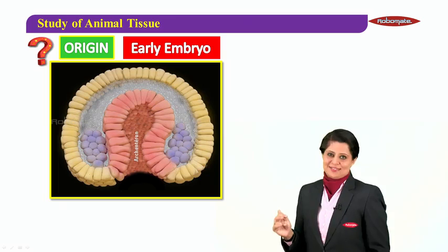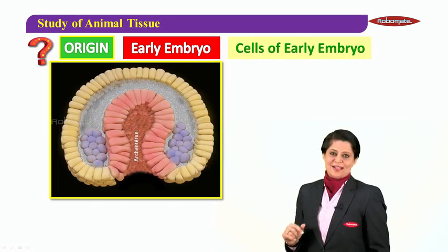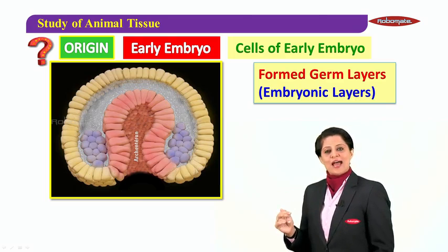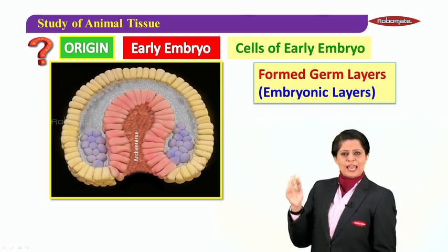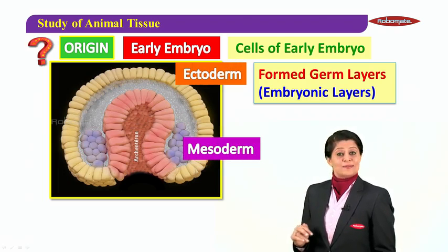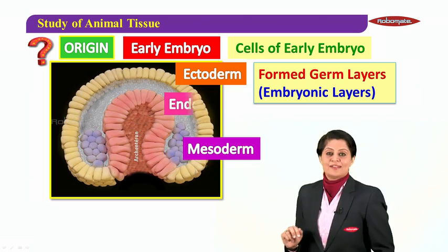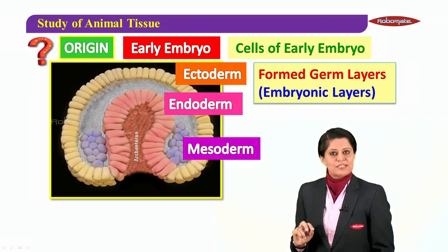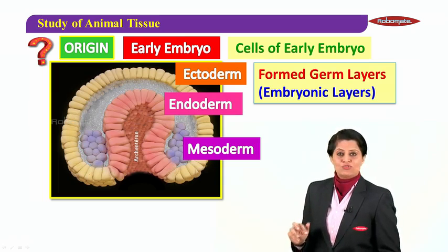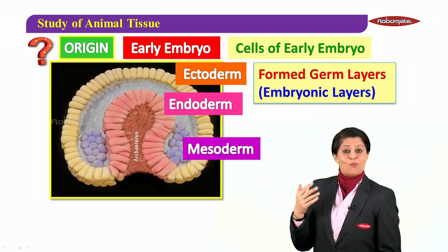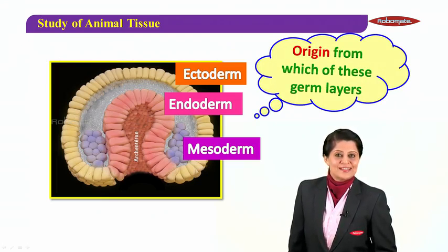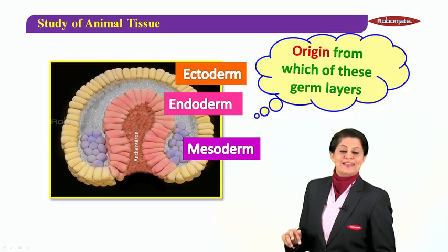As an early embryo, you had cells present in the form of germ layers, also known as embryonic layers. There are three layers: the outermost layer known as ectoderm, the middle layer known as mesoderm, and the innermost layer known as endoderm. These three layers in the early embryonic stage gave rise to different tissues, so when we talk about origin, we refer to which of these three germ layers a tissue originated from.